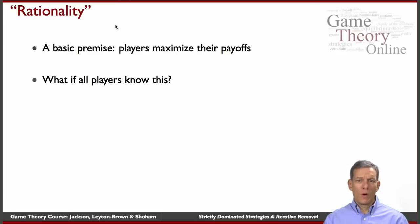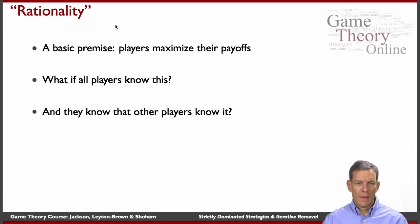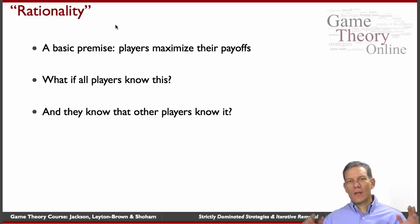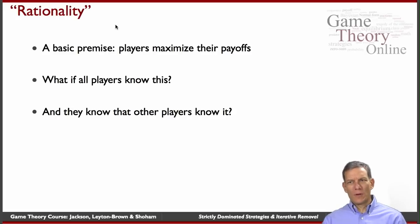What we're going to be thinking about is: what if all players know that other players maximize their payoffs? And we have an idea of what the structure of the game is — what does that mean for the game? Can we deduce something about what should be played? And what if all players know that all players know that players are rational in this sense? You can take this ad absurdum, but it's an important concept. Understanding what it yields gives us some insight into games and predictability.